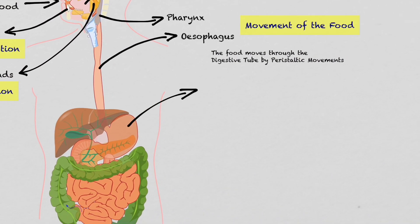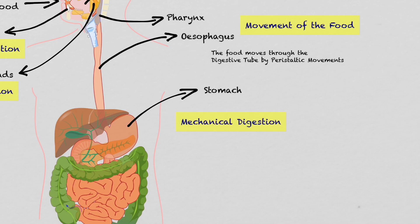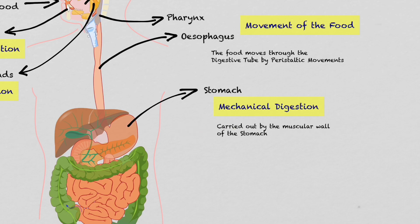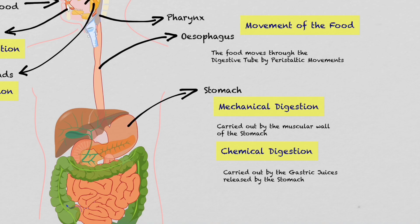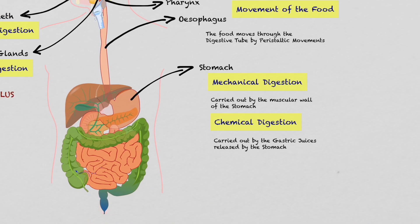In the stomach there are two extremely important events. The first one is mechanical digestion, which is carried out by the peristaltic movements of the wall. The second one is chemical digestion — the stomach releases gastric juices that digest the food. The bolus mixed with the digestive juices is transformed into chyme.